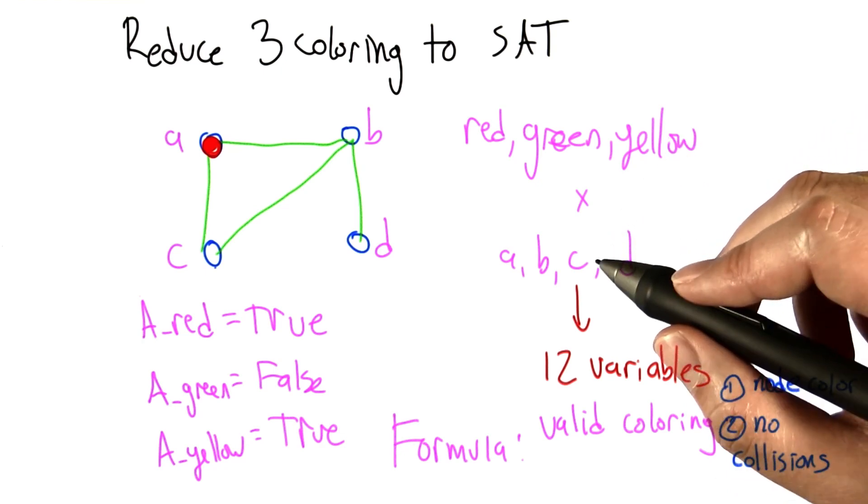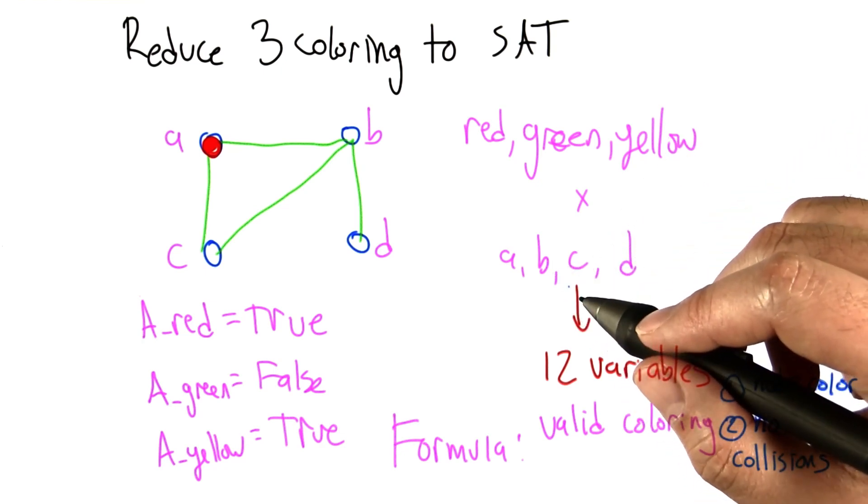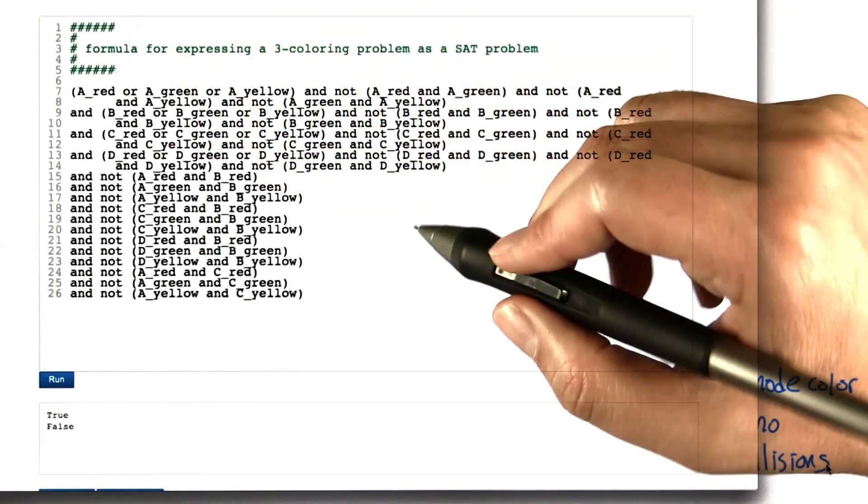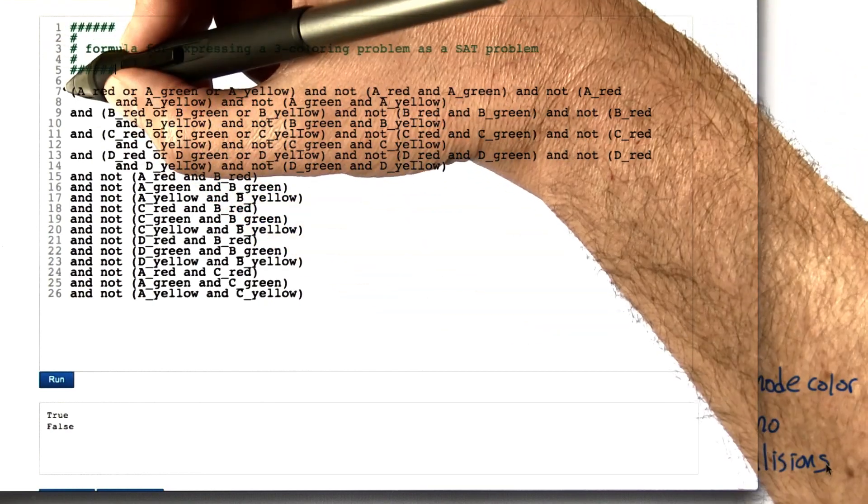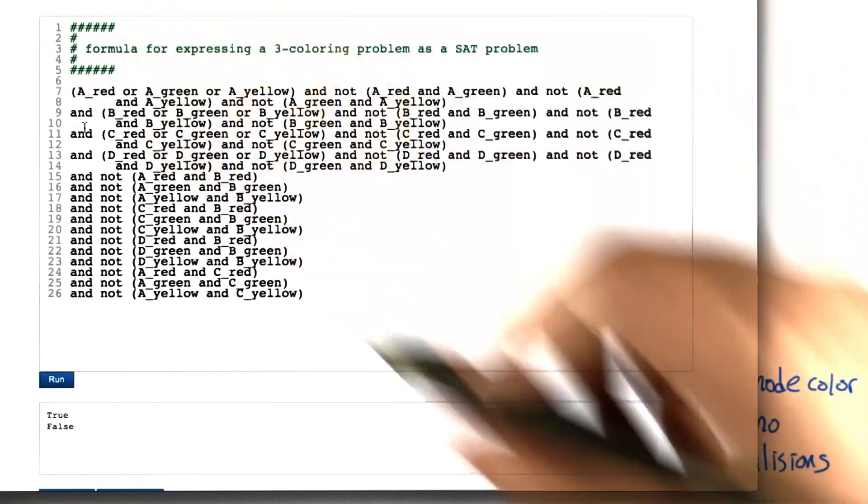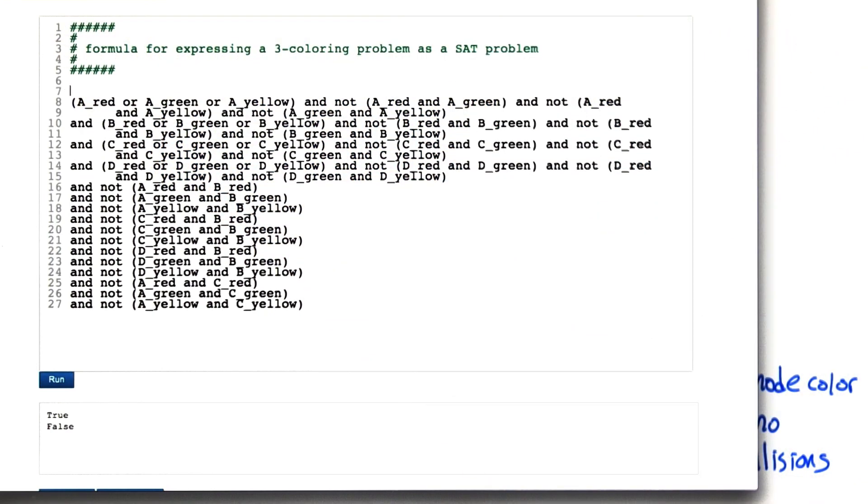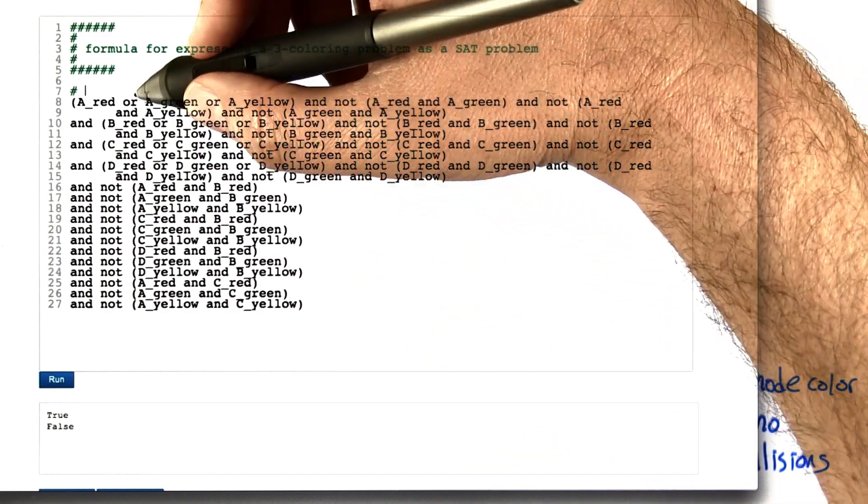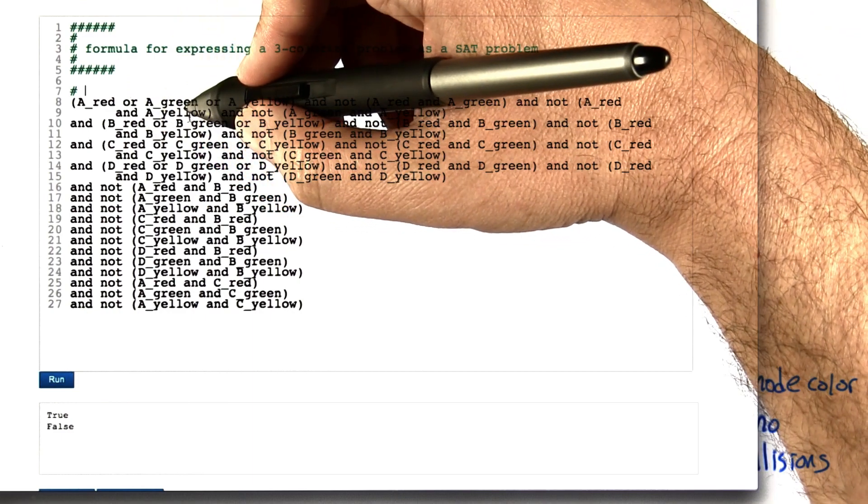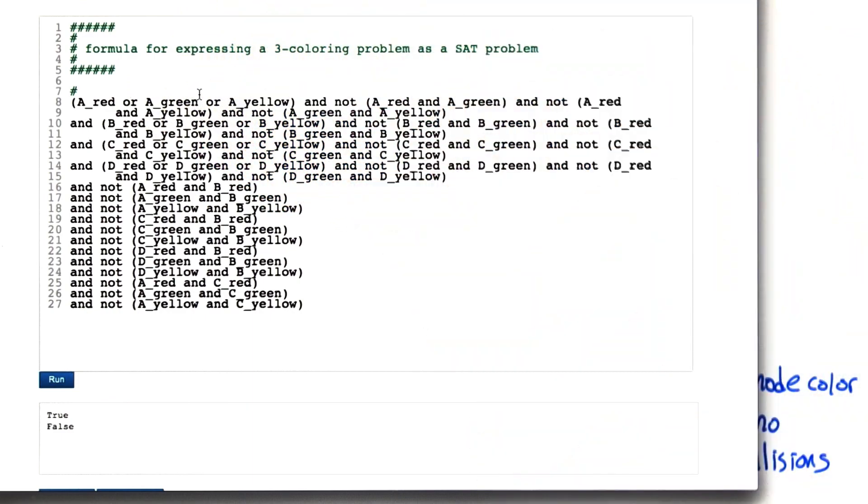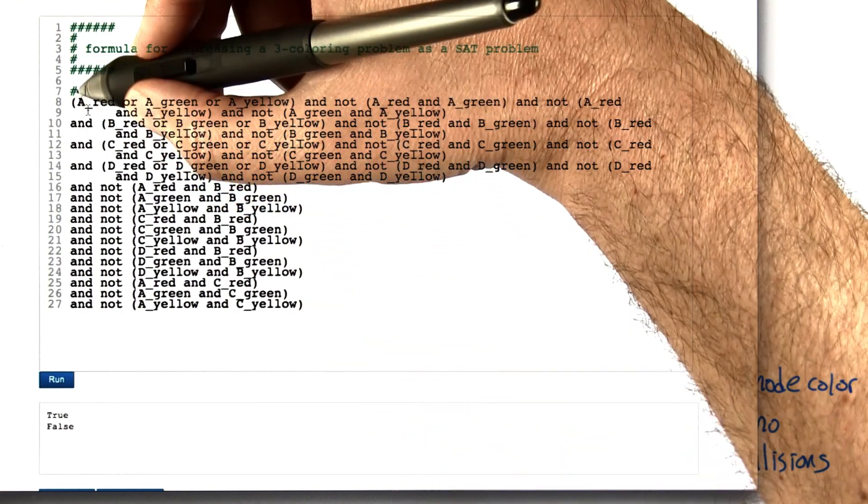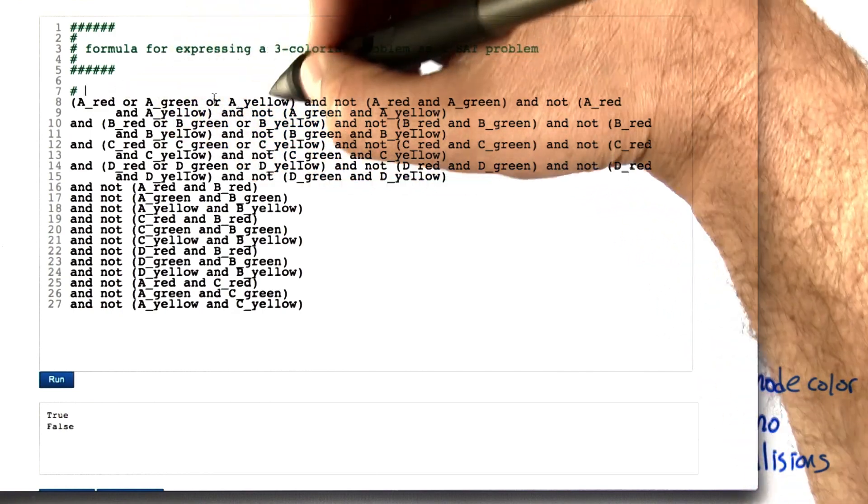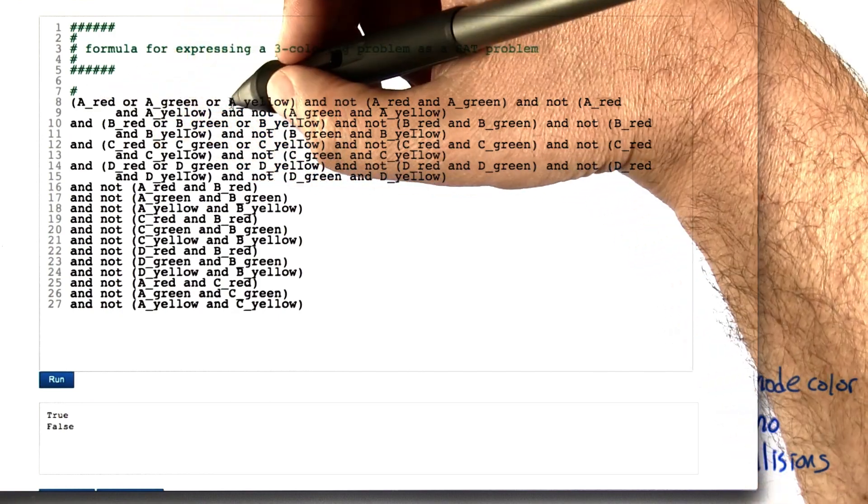So the formula for this can be generated automatically and I'll give you a glimpse at it. So here it is, at least one version of it. And it's a little bit weird and complicated but it actually falls into some nice structure. So first there's a bunch of logic to say that it should be the case that say the A_red, A_green and A_yellow variables, one of them should be true. If they're all false then that's not telling us what color A should be.